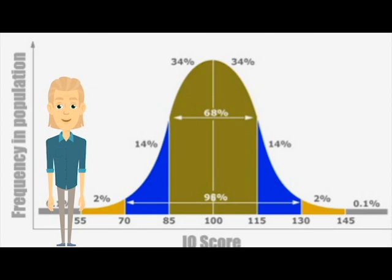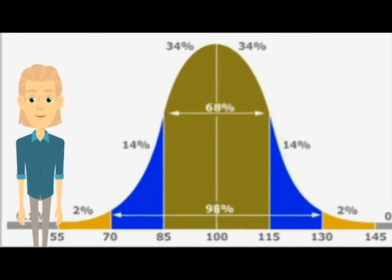Psychometric IQ tests like the Raven's Matrices test, the WACE-4, or Mensa IQ test measure G in a standardised way, where the average is 100 and scores have a bell curve distribution in the general population. You can see the average is 100, and 68% of people score between 85 and 115. If you have an IQ of more than 115, you're in the top 16% of the population. If you have an IQ of more than 130, you're in the top 2% of the population, which is Mensa's standard.